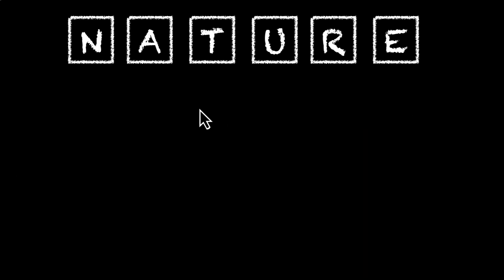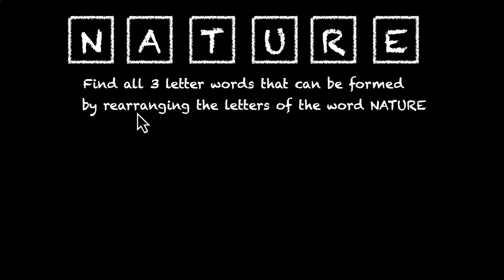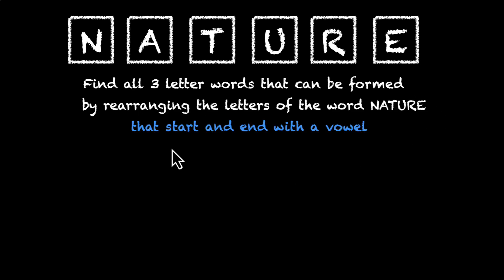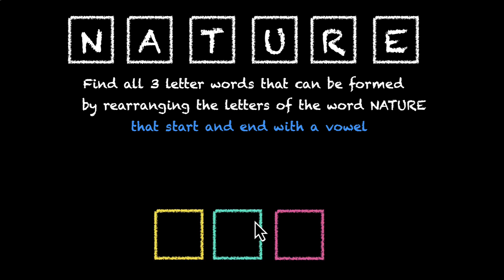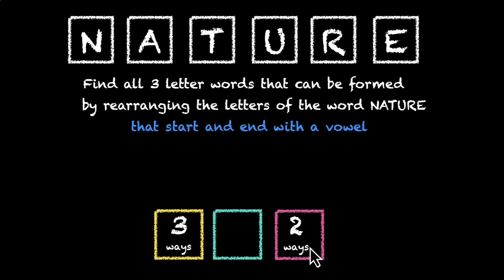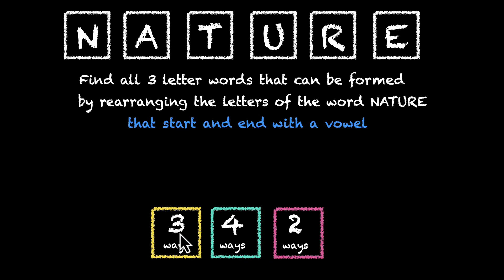Last one. N-A-T-U-R-E. We're finding all three-letter words that can be formed by rearranging the letters of the word nature, with the condition that these words should start and end with a vowel. Since we have three-letter words, we'll only have three boxes. The condition is the same — we'll first take care of the first and last letters. The yellow box first: we have three vowels, so three ways. The pink box will have two ways because two vowels are still left. For the last box, six minus two gives four letters left, so it can be filled in four ways. So three times four times two — that's 24 ways.